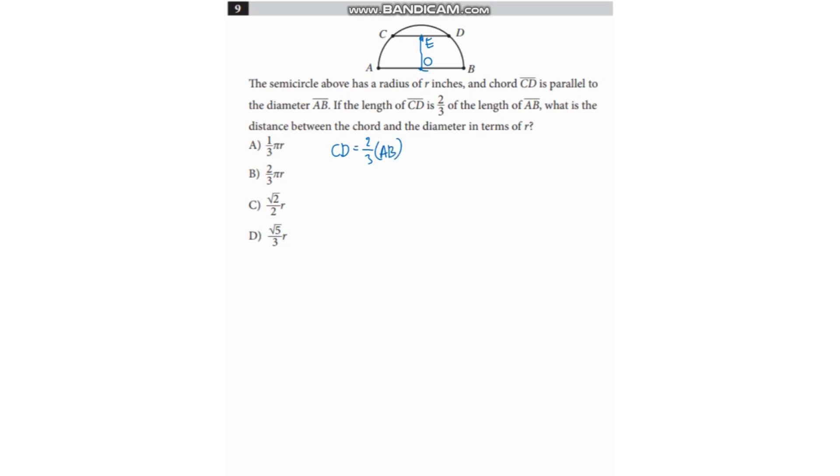And actually we only need half of CD. So half of CD is actually equal to two-thirds times one-half of AB. One-half of CD is actually equal to two-thirds of... But one-half of AB is equal to R. And that is the radius of the semicircle. So let's label this as R.